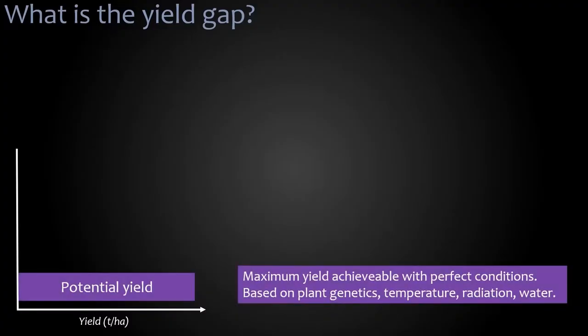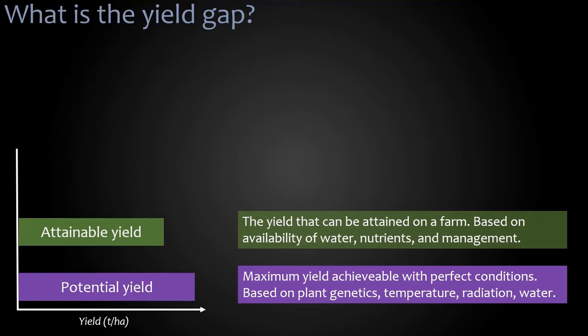Every plant has what's called a potential yield — the maximum amount of grain, fruit, or vegetable that a plant can produce under perfect conditions. It's due to the genetics of the plant, the temperature, and the ideal solar radiation and water. We can very rarely or almost never achieve potential yield. In a farm, there's something called the attainable yield — the yield that can be attained if a farmer is able to manage well his or her water, nutrients, and the overall management of the farm and the crop.